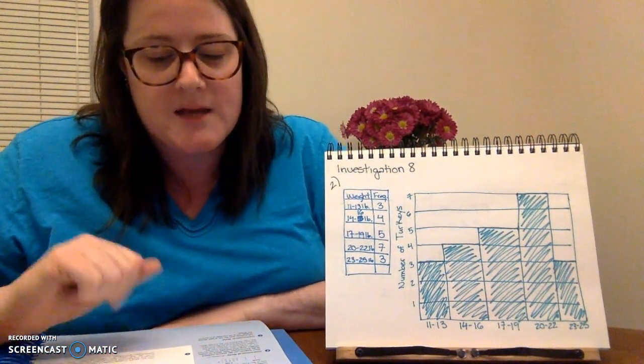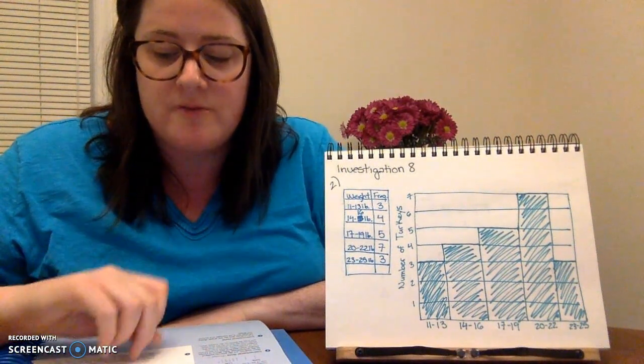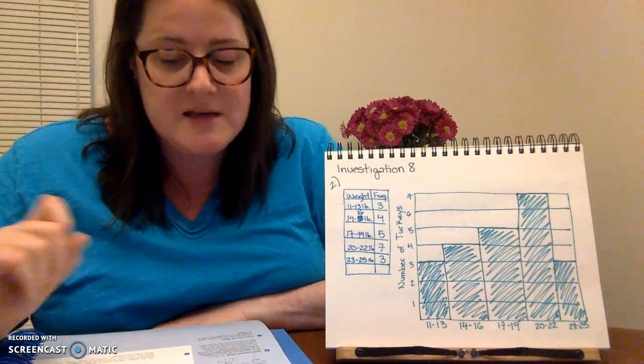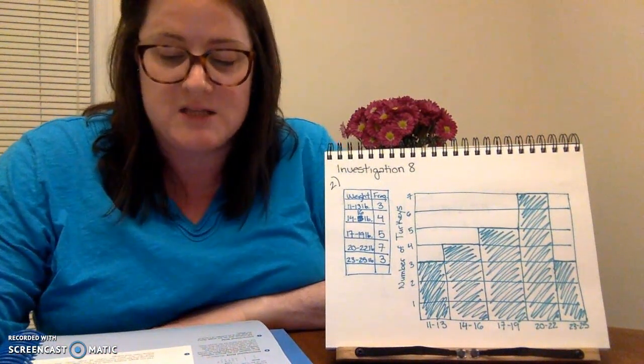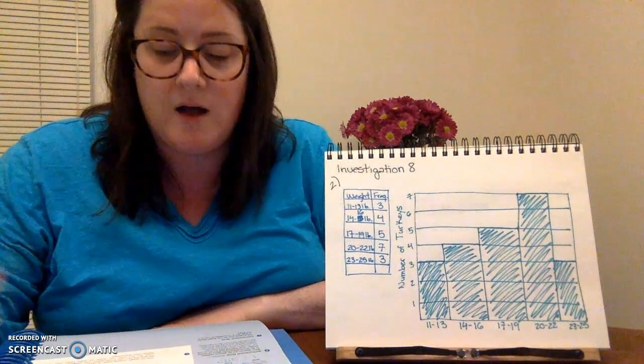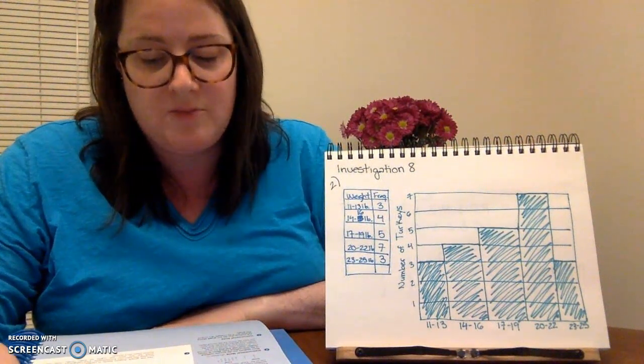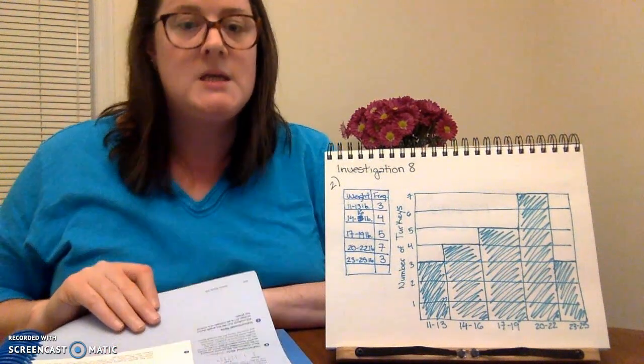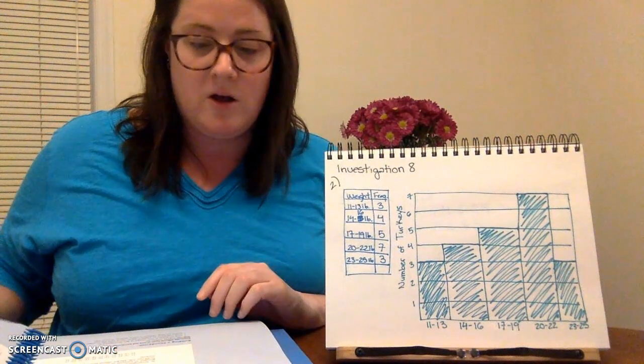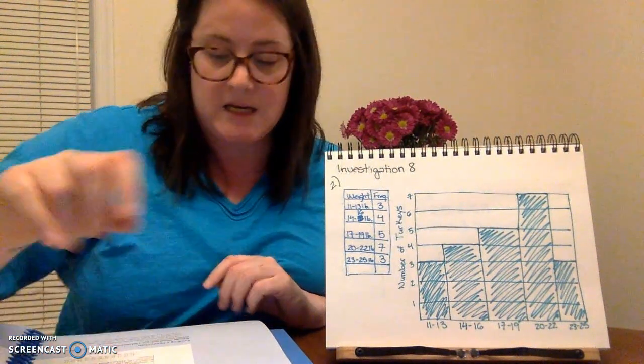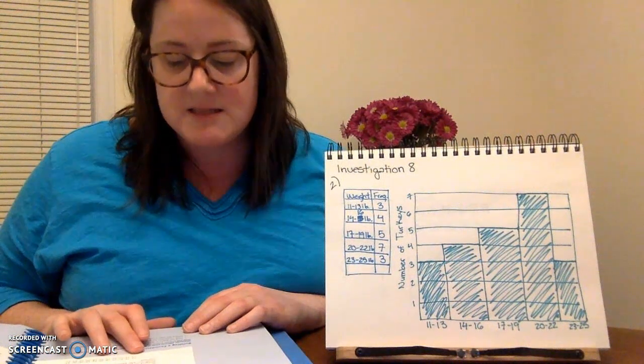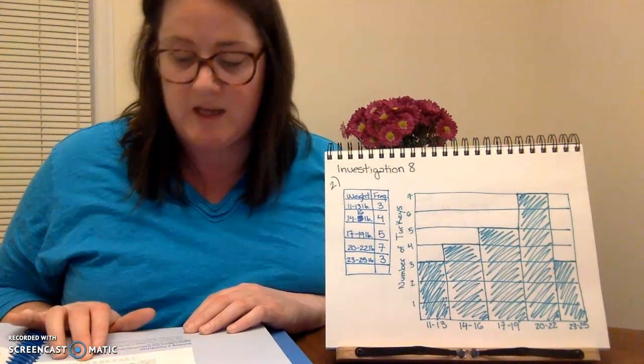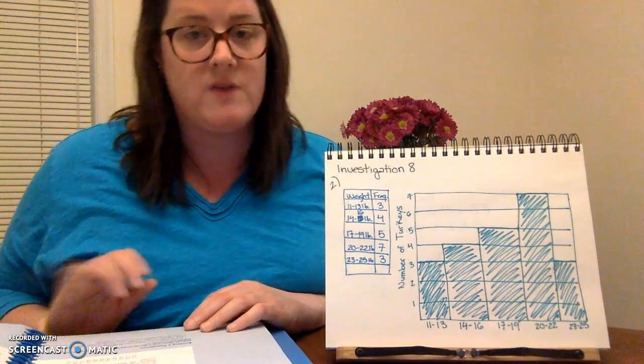Number three asks us to make a stem and leaf plot for the second row of weights in the list. And then number four asks us to use the information in the stem and leaf plots for the first and second row of the list of weights to make a stem and leaf plot for the weight of all 22 turkeys. If you look back on page 418, the second row of data is 19, 13, 14, 22, 19, 22, 18, 20, 12, 25, and 23.